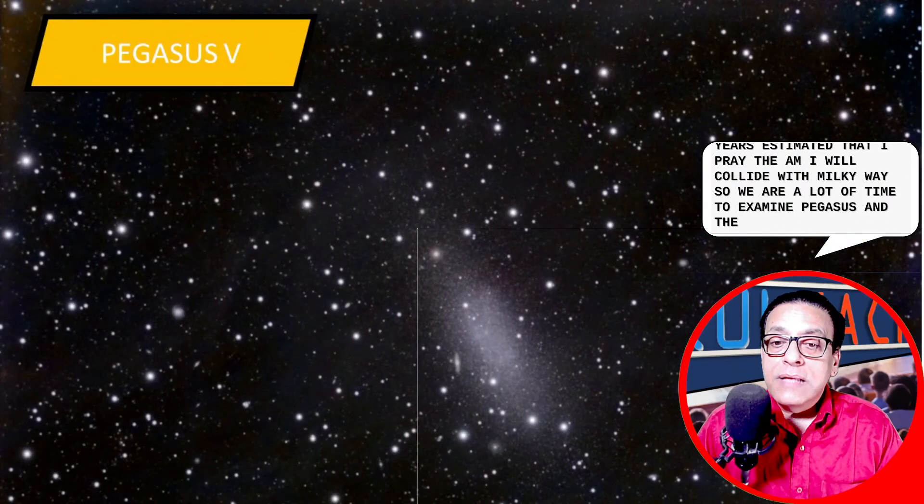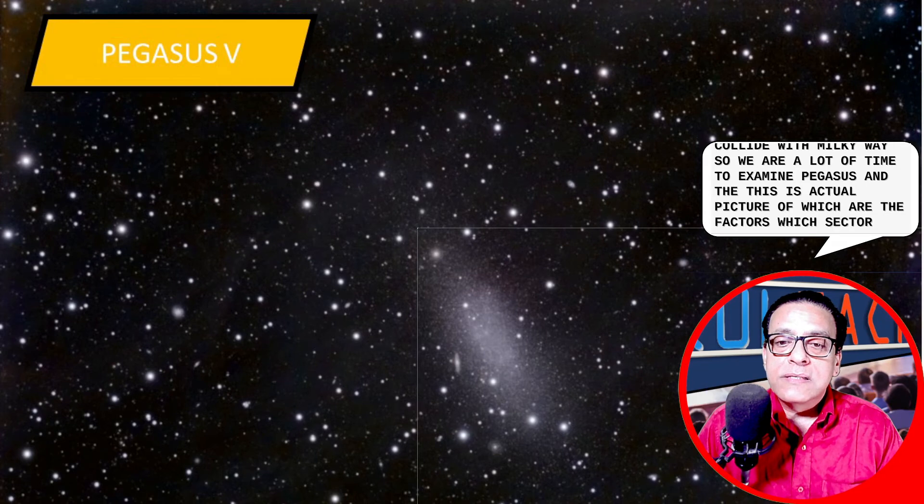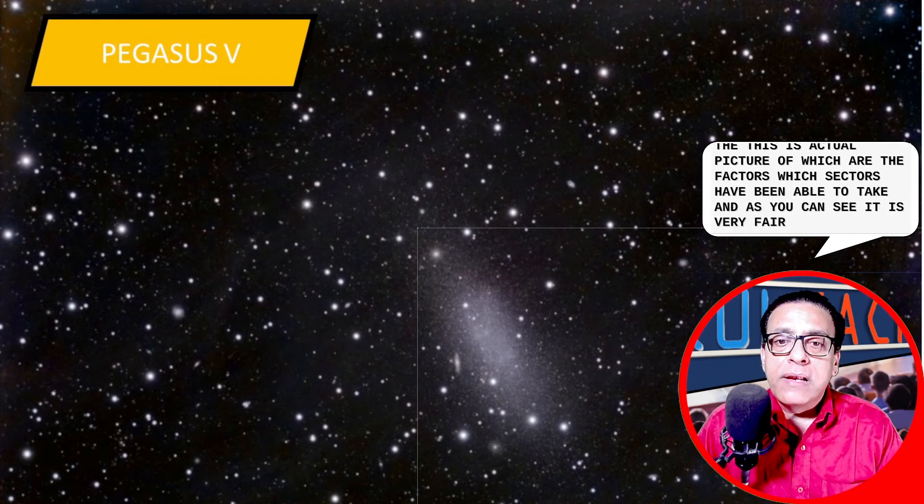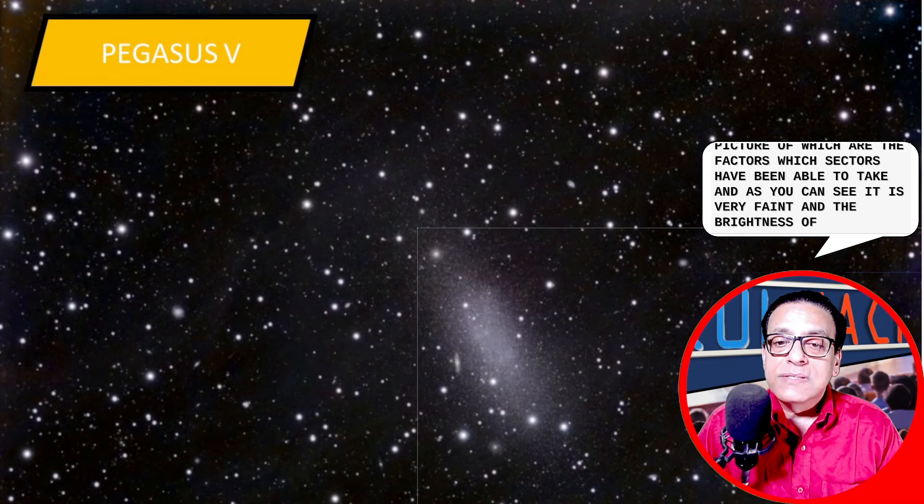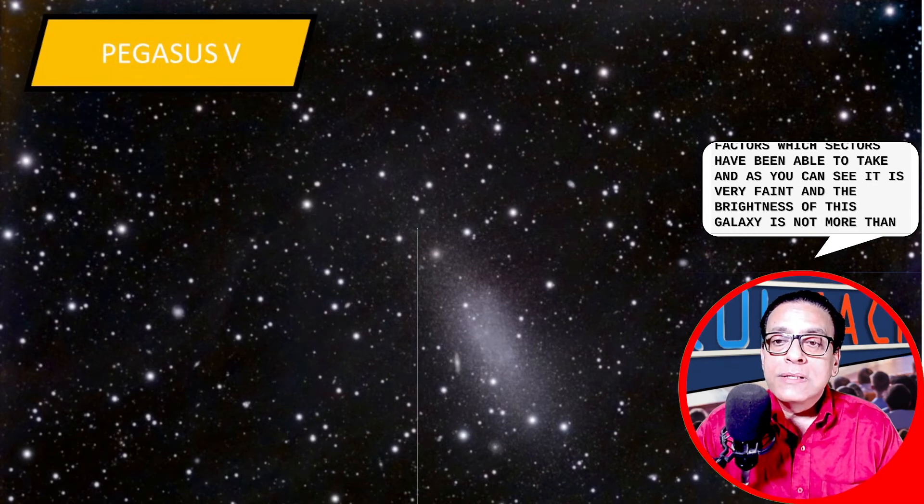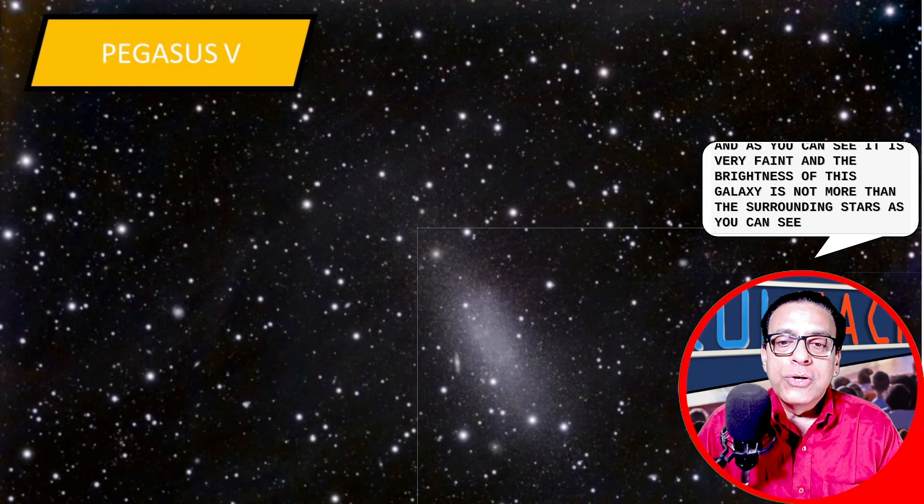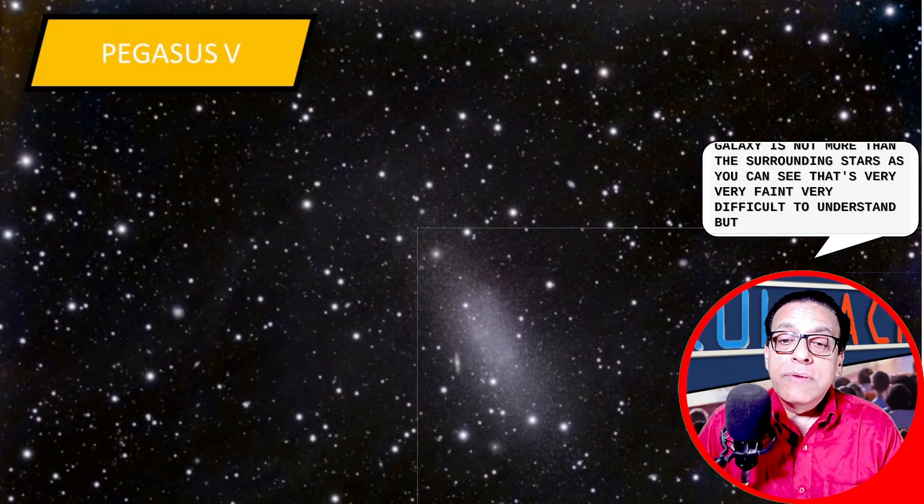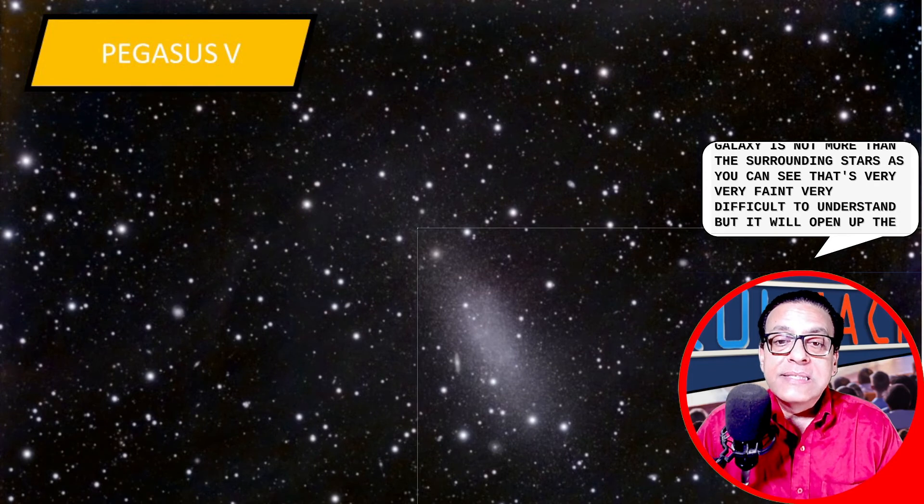And this is actually a picture of the Pegasus, which scientists have been able to take. And as you can see, this is very faint and the brightness of this galaxy is not more than the surrounding stars as you can see. So it is very, very faint, very difficult to understand.